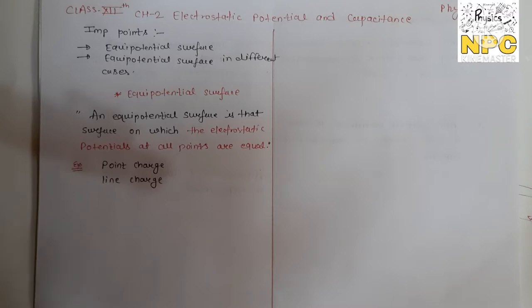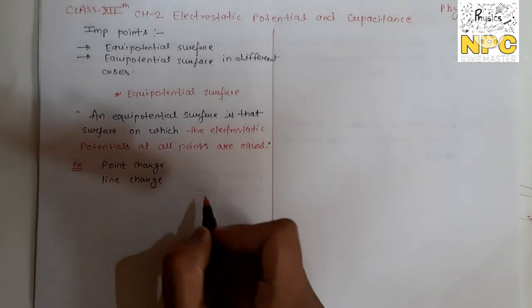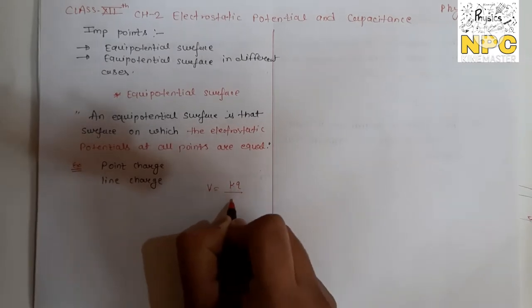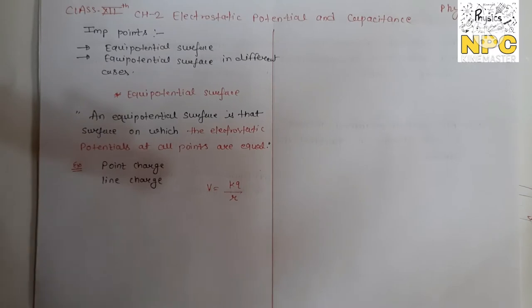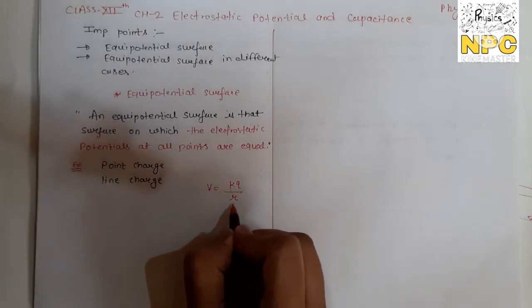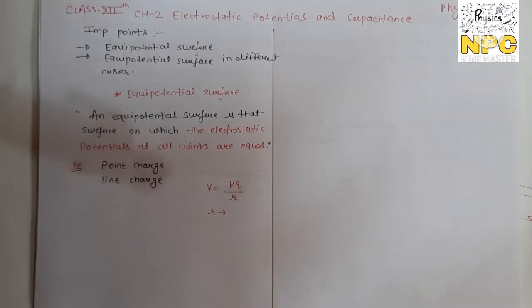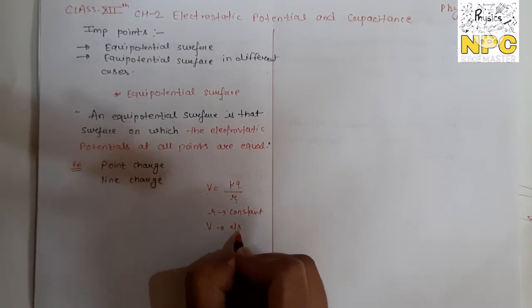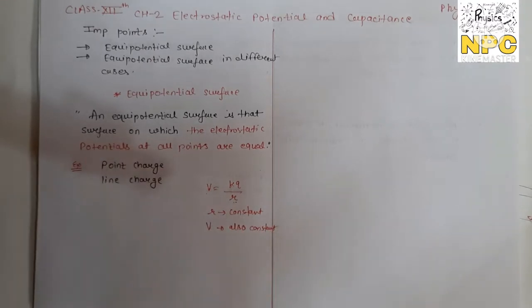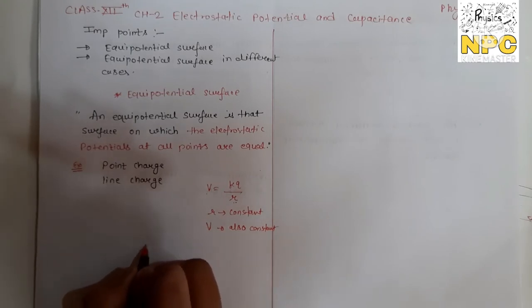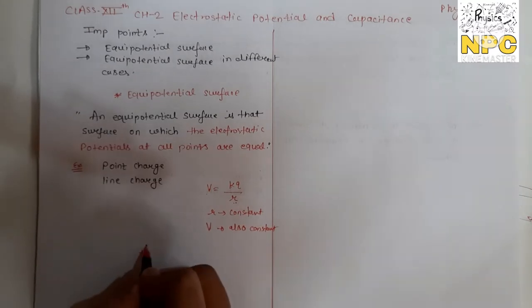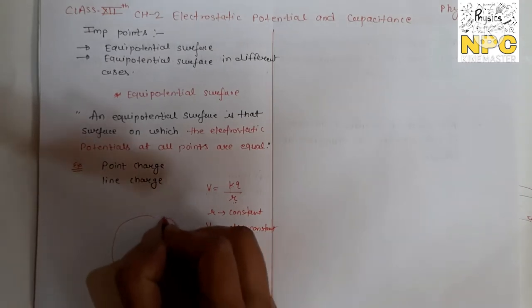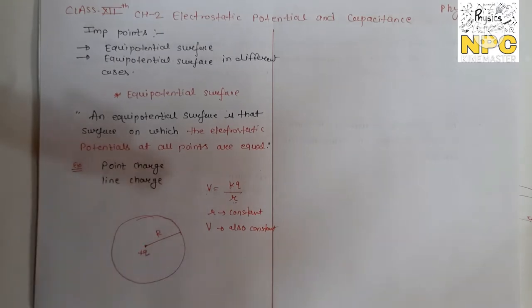We have two examples: the potential due to a point charge and a line charge. The potential due to a point charge is equal to kQ/r. This means if r is constant, V also becomes constant. K and Q are constant, but V depends on r. So if you keep R constant, potential V also becomes constant. Keeping this concept in mind, let's discuss example number one for a point charge.